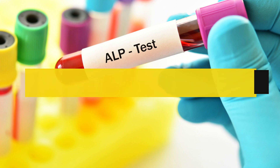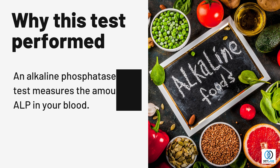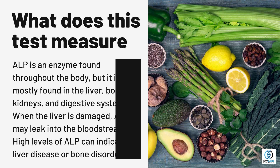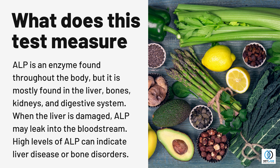Alkaline Phosphatase. An alkaline phosphatase, ALP, test measures the amount of ALP in your blood. ALP is an enzyme found throughout the body, but it is mostly found in the liver, bones, kidneys, and digestive system.